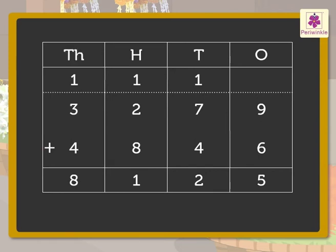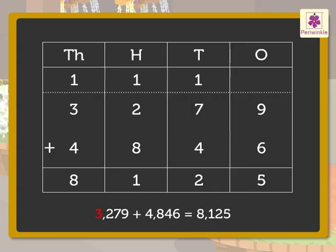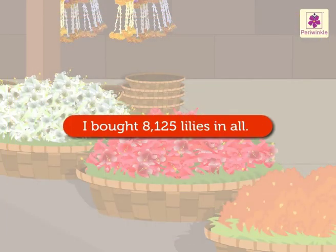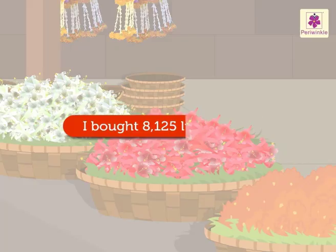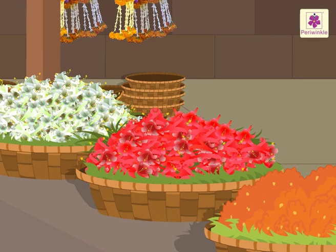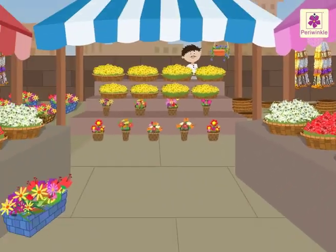Hence, we get the number eight thousand one hundred twenty-five. We say the sum of three thousand two hundred seventy-nine and four thousand eight hundred forty-six is eight thousand one hundred twenty-five. Thus, I bought eight thousand one hundred twenty-five lilies in all. Yippee! Didn't we have fun shopping at the flower market?